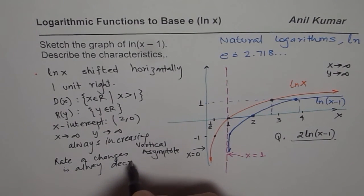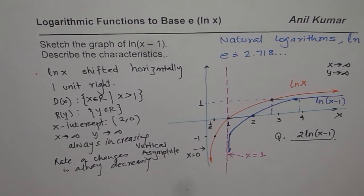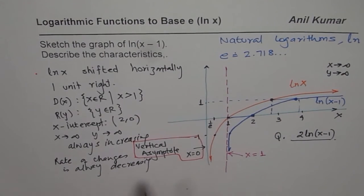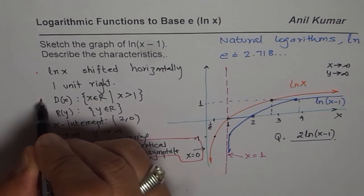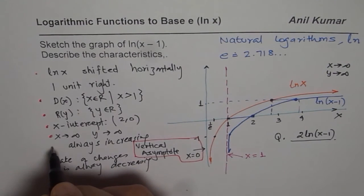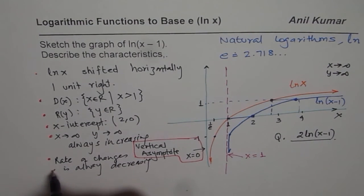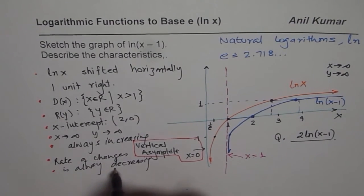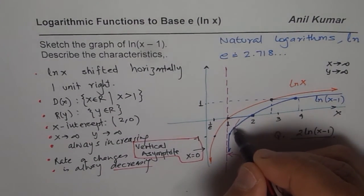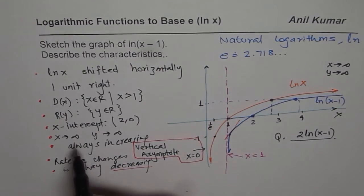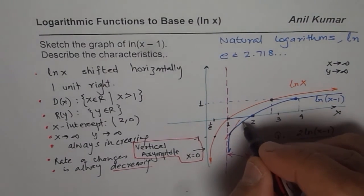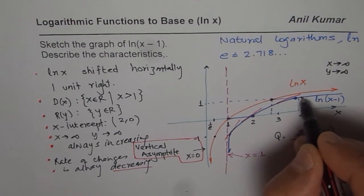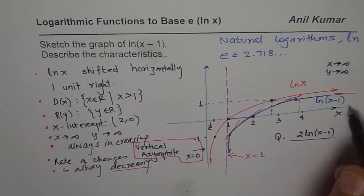And those of you who have done rate of change will say that the rate of change is always decreasing. This is important. Okay, so these are the characteristics we just listed. If I draw a tangent here, it is positive first because the function is always increasing, that means the slope is always positive as you can see, but the slope decreases. Do you see that? It becomes lesser and lesser.